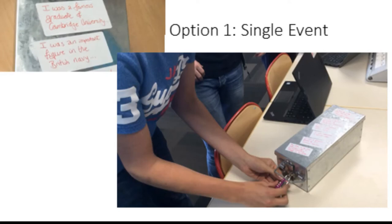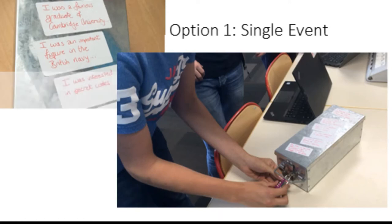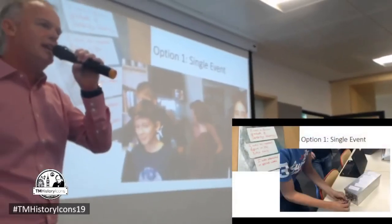The next day — Tuesday morning — another clue: 'I was an important figure in the British Navy.' They start talking: is it Admiral Nelson? I might hover over them and say, 'Well, you're in Year 10, maybe it's the guy who invented the Dreadnought,' and wander off. They start talking — 'Who was that? Oh, Jackie Fisher!' — and they start researching them on their phones. Wednesday: 'I was interested in secret codes.' Thursday: 'I was a personal friend of Sir Isaac Newton.' That kind of takes certain people out of the equation.